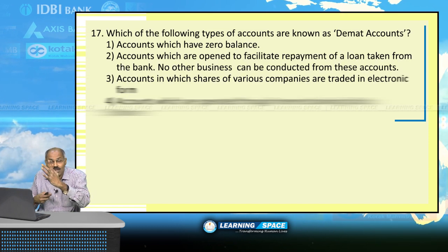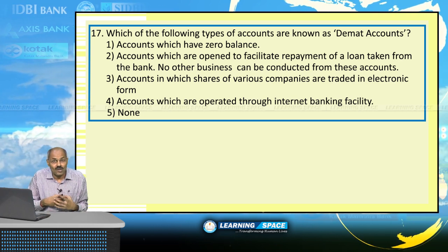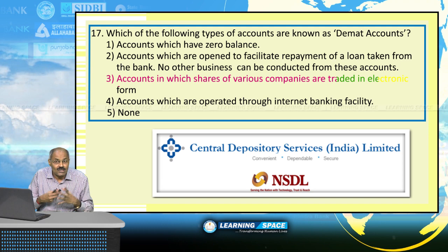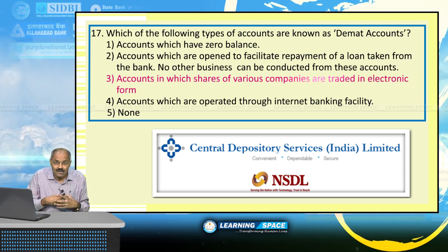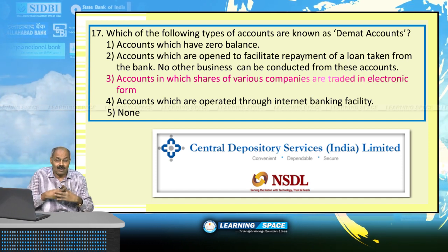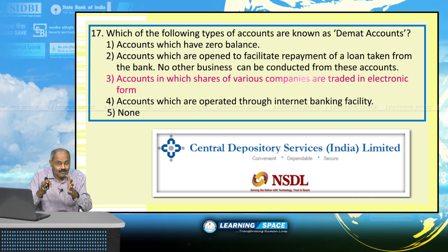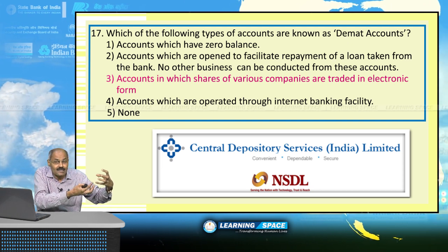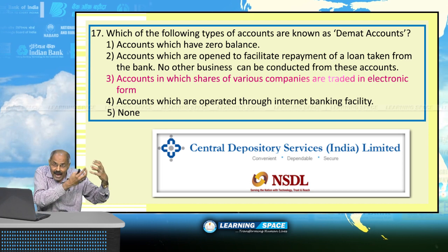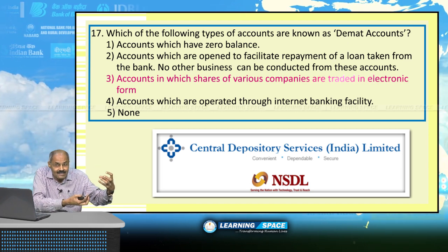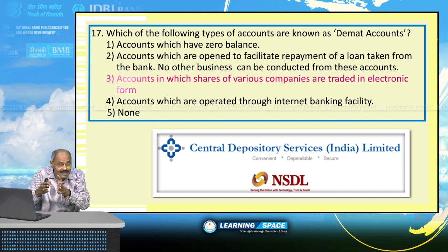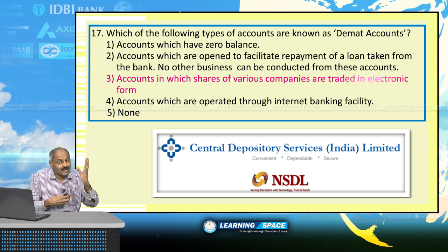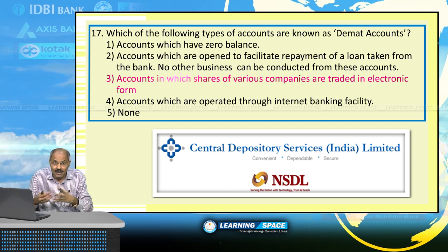DMAT accounts are accounts in which shares of various companies are traded in electronic form. You can invest in and sell shares at any point of time through a DMAT account. The DMAT account is actually maintained with either NSDL or CDSL, while the bank acts only as an intermediary or depository participant (DP).